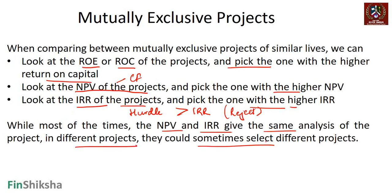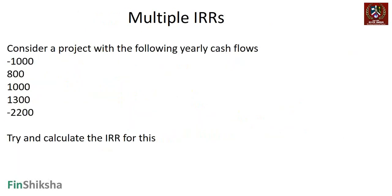There are some rare cases when comparing two projects where one ranks higher on the NPV rule and another ranks higher on the IRR rule. In these cases, how we go about dealing with these scenarios and issues will be the crux of this discussion. Let's take the example of a project with a specific set of cash flows in years 0, 1, 2, 3, and 4.